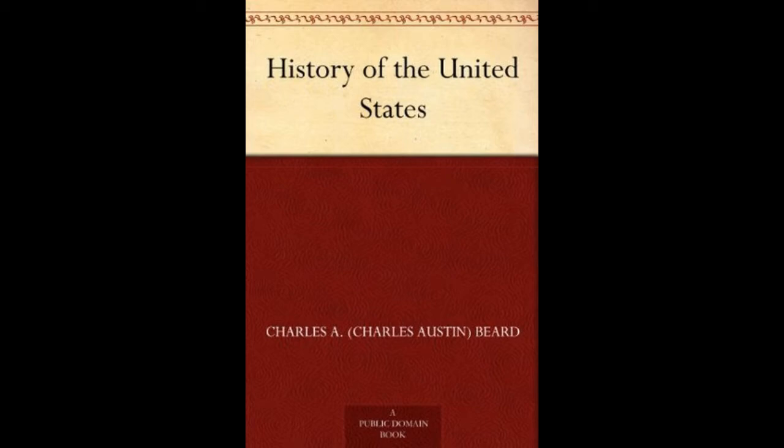The law of primogeniture made a form of tenantry or servitude inevitable for the mass of those who labored on the land. It also enabled the landlords to maintain themselves in power as a governing class and kept the tenants and laborers subject to their economic and political control. If land tenure was so significant in Europe, it was equally important in the development of America, where practically all the first immigrants were forced by circumstances to derive their livelihood from the soil. In the New World, with its broad extent of land awaiting the white man's plough, it was impossible to introduce in its entirety the system of lords and tenants that existed across the sea. So it happened that almost every kind of experiment in landed tenure, from communism to feudalism, was tried.